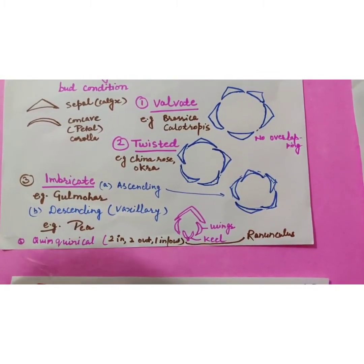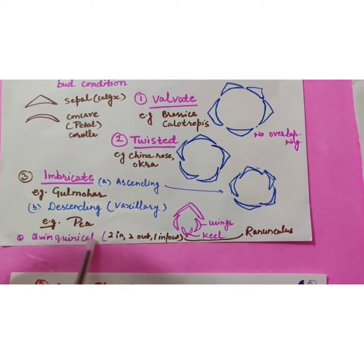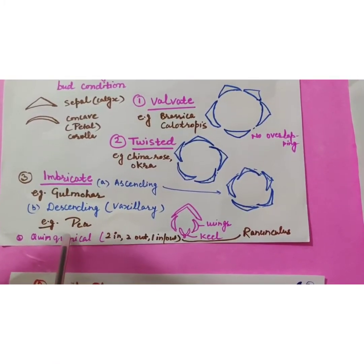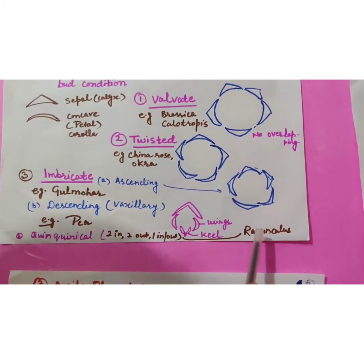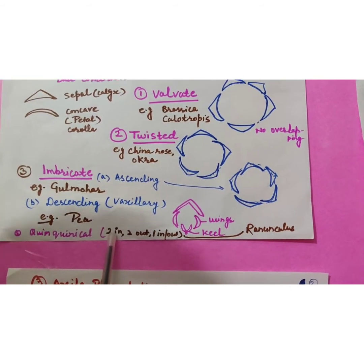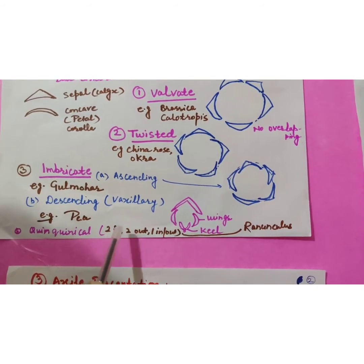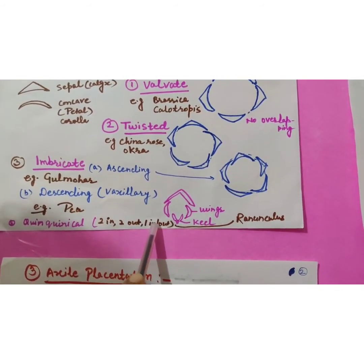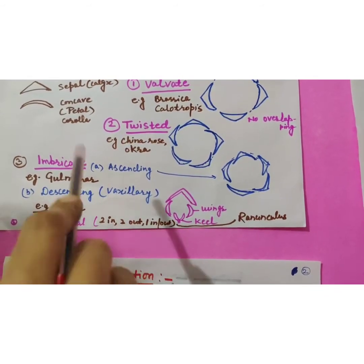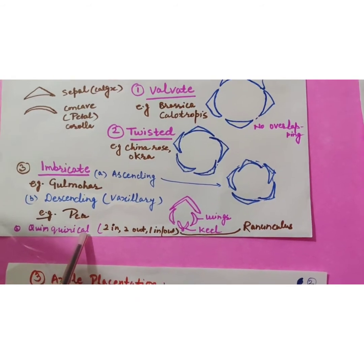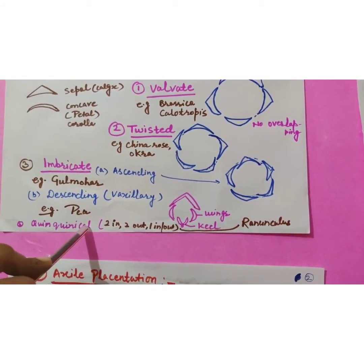Then quinquencial aestivation, it is rarely found, it is present in ranunculus. Two in, two sepals or petals, two in, two completely out, one in means one end in, one end out. So 2 in, 2 out, 1 in, out. It is for extra information otherwise it is not included in your syllabus.